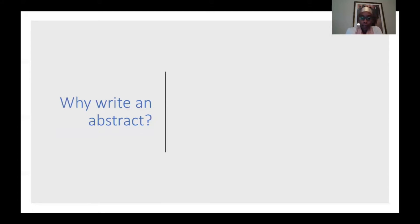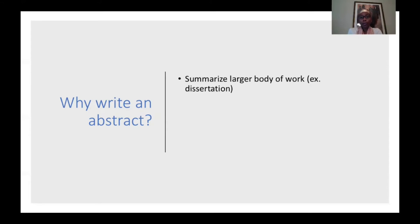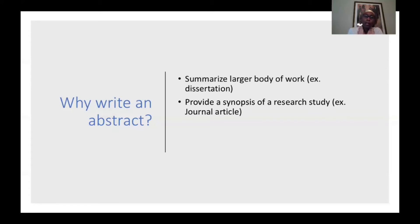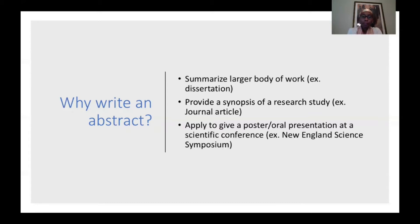Some of you may be asking, why write an abstract? An abstract can sometimes take the form of a summary of a larger body of work, such as for a thesis paper or a dissertation. It can also provide a synopsis of a research study, which you often see in journal articles. You can also use an abstract to apply to give a poster or oral presentation at a scientific conference, such as the New England Science Symposium.